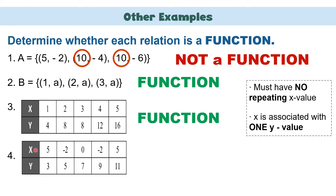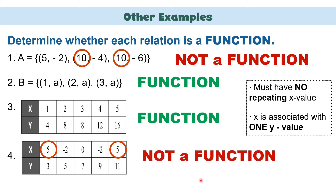Another example: x values are 5, -2, 0, -2, 5, and y values are 3, 5, 7, 9, 11. As you can see, we have repeating x values — there are two 5s as well as two -2s. Therefore, this set is not considered a function.